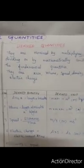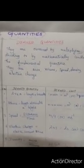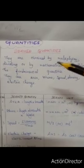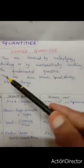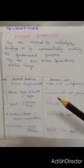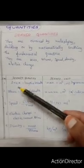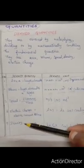Now let us look into derived quantities. Derived quantities are the quantities obtained by multiplying, dividing, or by mathematically combining the fundamental quantities. Examples: area, volume, speed, electric charge, and density.